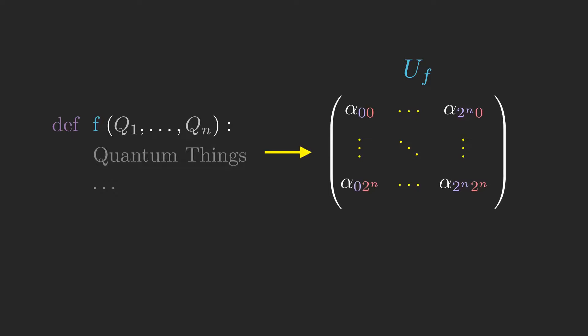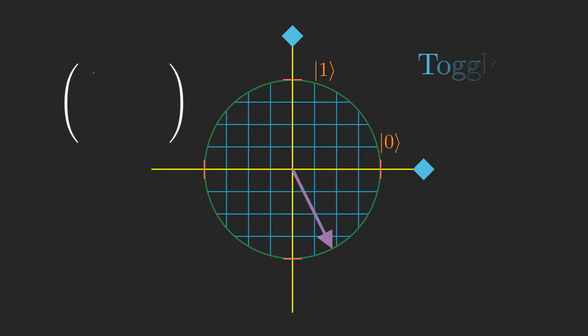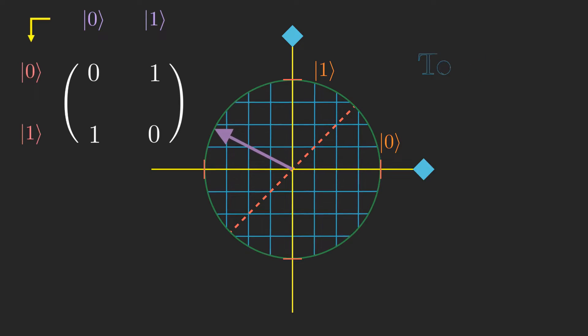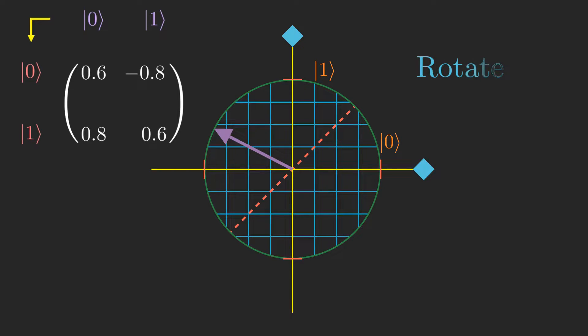To get a better feel for how these matrices work, let's look at the matrix for toggle. This operation corresponds to a reflection about the 45 degree axis. The instruction rotate from last time is named for a reason, which is that it rotates the state vector.